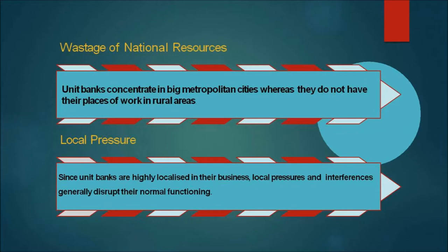Unit banks concentrate in big metropolitan cities and do not have their places of work in rural areas, resulting in uneven and unbalanced growth of banking facilities. There is no facility for banking development in backward areas because of limited resources — they cannot afford to open uneconomic branches in smaller towns and rural areas. As such, these areas remain unbanked. Finally, unit banks face a lot of local pressure — since unit banks are highly localized, local pressures and interference generally disrupt their normal functioning.